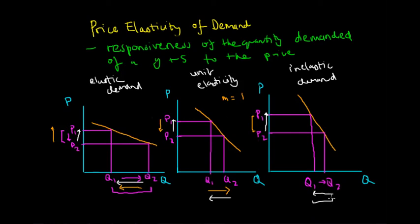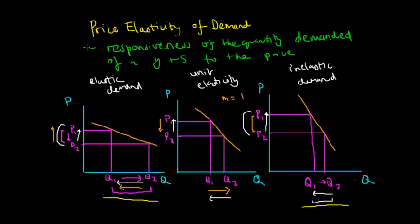Even though the change in price is the same magnitude as in the elastic demand curve example, the change in quantity demanded is significantly smaller for a product with an inelastic demand curve. This is the theory behind the price elasticity of demand — it is the responsiveness of the quantity demanded of a good or service to its price.